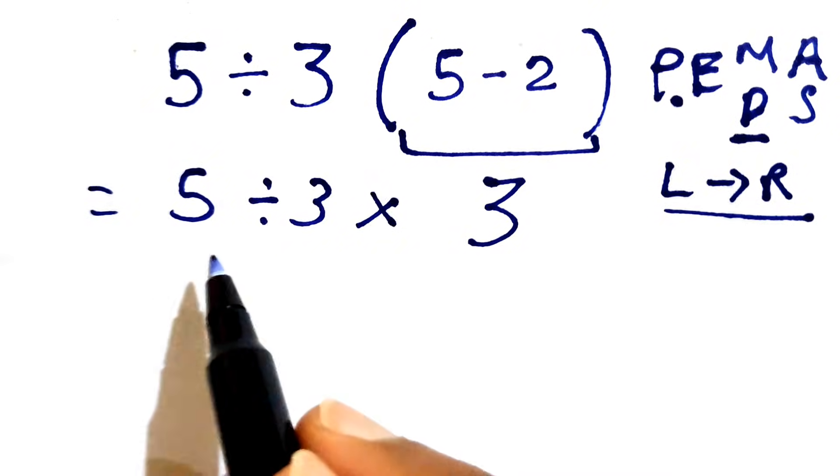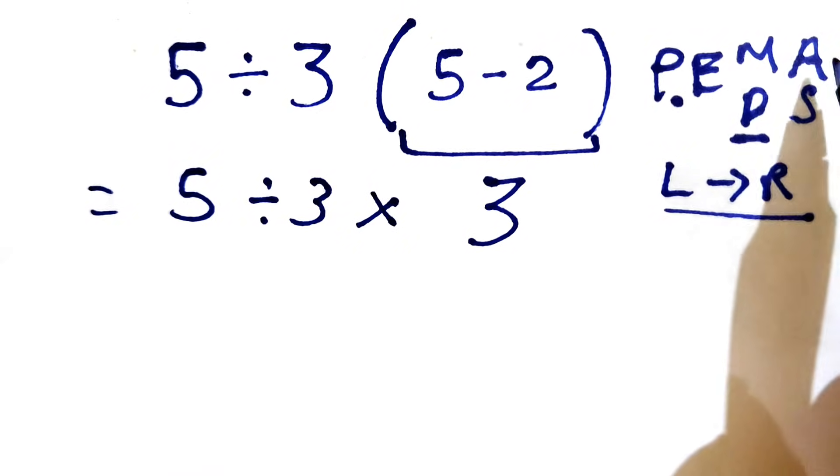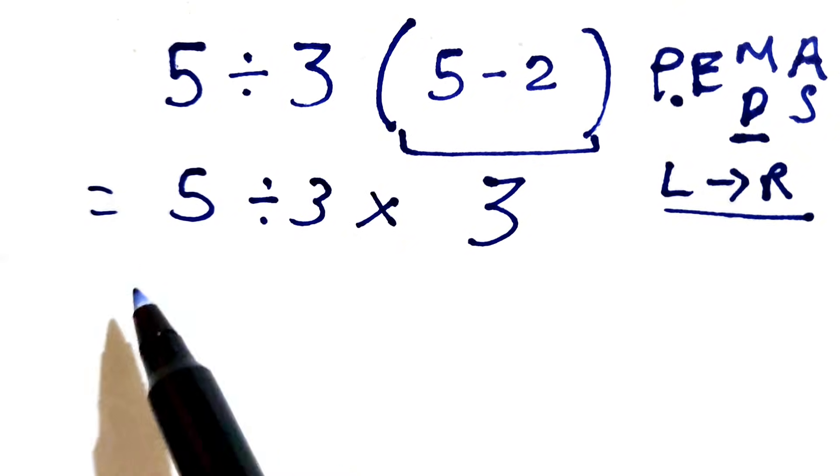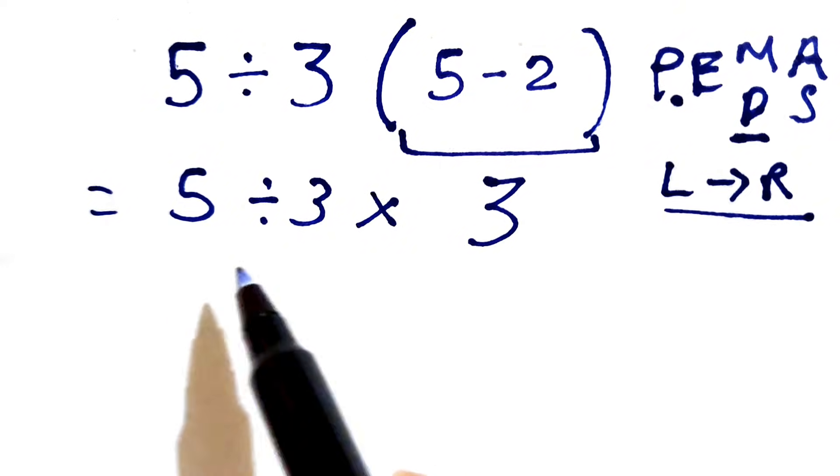As we discussed, first we need to solve the division because the priority of multiplication and division is the same, and we need to go from left side towards the right. So the division comes first.